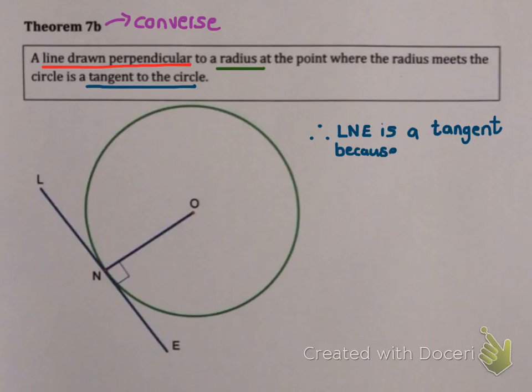So in this example, LNE would be a tangent, because you're given that it's perpendicular. Now if you ever use this theorem to prove that a line is a tangent, the reason is going to be because the line is perpendicular to the radius. We don't even have an example of 7B, because it's really quite an obscure theorem that really doesn't come up much. So you might see it once or twice in our mixed examples at the end of the section.